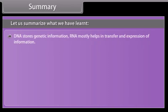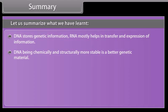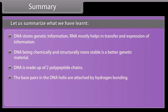Summary: DNA stores genetic information, while RNA mostly helps in the transfer and expression of information. DNA, being chemically and structurally more stable, is a better genetic material. DNA is made up of two polynucleotide chains. The base pairs in the DNA helix are attached by hydrogen bonding, and complementary base pairing occurs in the DNA helix.